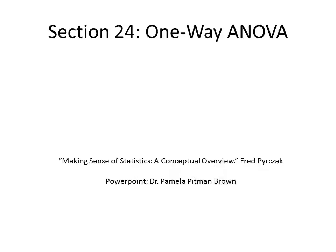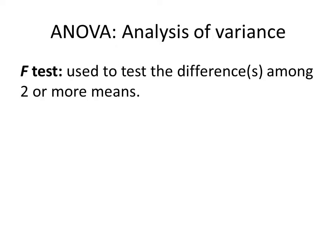This is section 24: one-way ANOVAs. The acronym ANOVA stands for Analysis of Variance. We talked in sections 22 and 23 about the t-test, which tests the null hypothesis regarding differences between two means. The ANOVA, or Analysis of Variance statistical procedure, performs what is called an F-test.